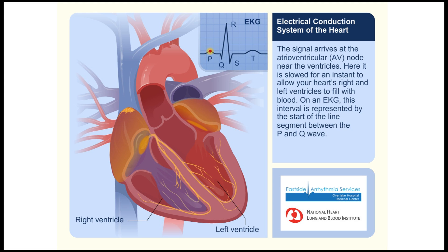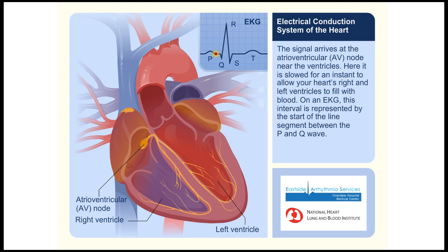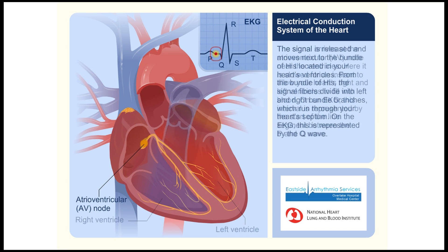The signal arrives at the atrioventricular node near the ventricles, where it is slowed for an instant to allow your heart's right and left ventricles to fill with blood. On an EKG, this interval is represented by the start of the line segment between the P and the Q wave.